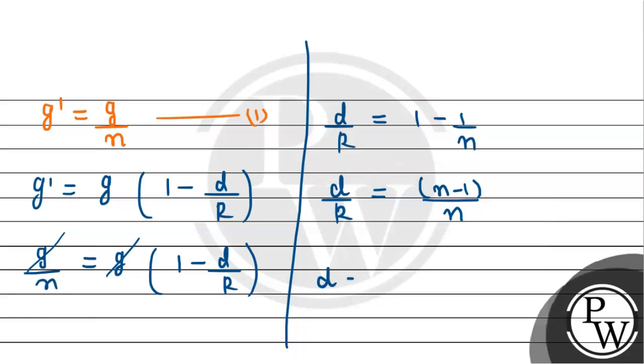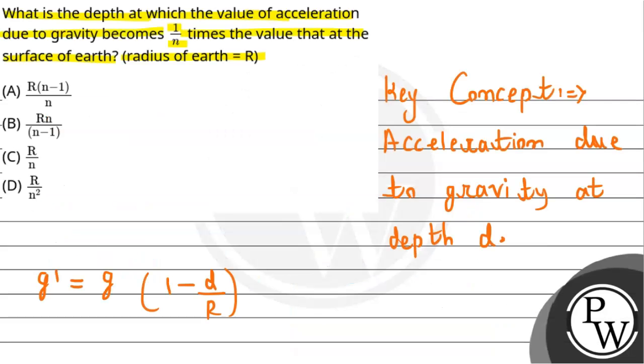And since we have to calculate the depth d, it will equal R multiplied by n minus 1 divided by n. Therefore, this is the required answer to our question. According to the given options, R times n minus 1 by n, option A is correct.